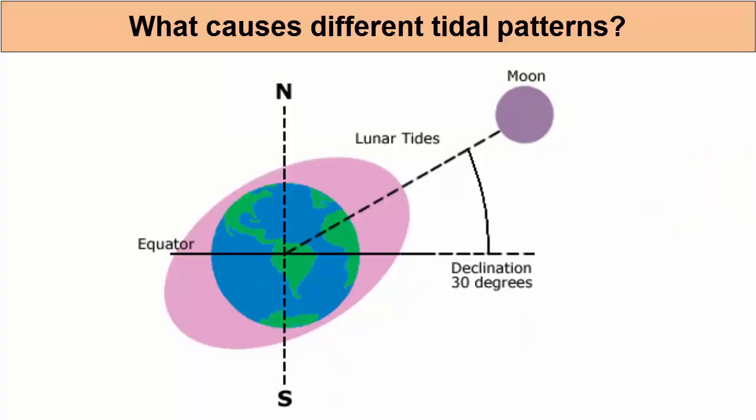How do we use the tidal bulge model to explain the variety of tidal patterns we find across the globe? This picture reminds us that while the Earth is orbiting the Sun and rotating through the lunar bulges, it is tilted at a 23.5 degree angle.